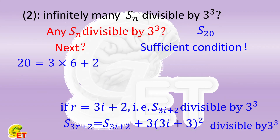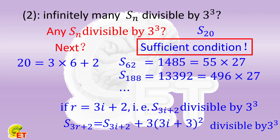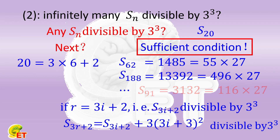Going back to S(20): we find that 20 is exactly 3·6 + 2. So since S(20) is divisible by the cube of 3, we can apply the rule n → 3n + 2 to obtain infinitely many such values. For example, 3·20 + 2 = 62, and 3·62 + 2 = 188, and so on. Indeed, S(62) equals 55 times the cube of 3, and S(188) equals 496 times the cube of 3. Of course, this is only a sufficient condition — for instance, S(91) also equals 116 times the cube of 3, but 91 is not in this sequence. Nevertheless, by using this sufficient condition, we have proved there are infinitely many S(n) divisible by the cube of 3.